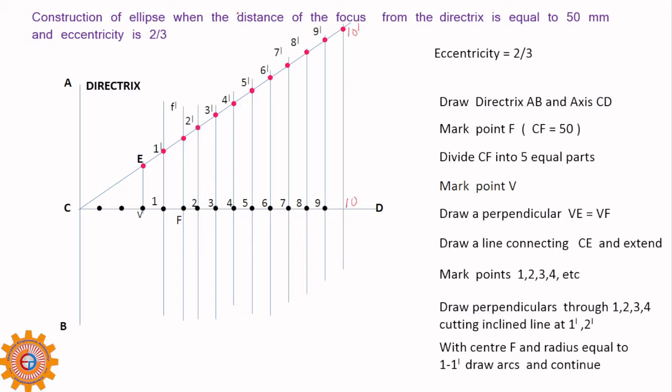This 1, 1 dash and 2, 2 dash will become radii for the arcs to be drawn. What should we do now? Taking F as center and 1, 1 dash as radius, you have to draw one arc. Next step, taking F as center, 2, 2 dash as radius.